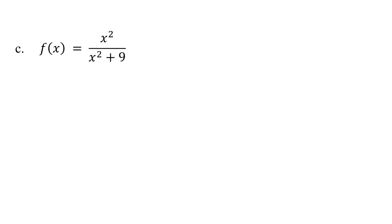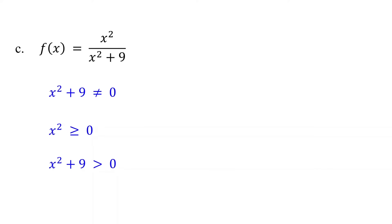For this function to be defined, x squared plus 9 must not equal zero. Notice that when we square any real number, the result is always a non-negative number. Adding 9 to that squared value will always result in a positive number — it can never be zero. So there is no real value of x that would make the denominator equal to zero. Therefore, the domain of this rational function is all real numbers.